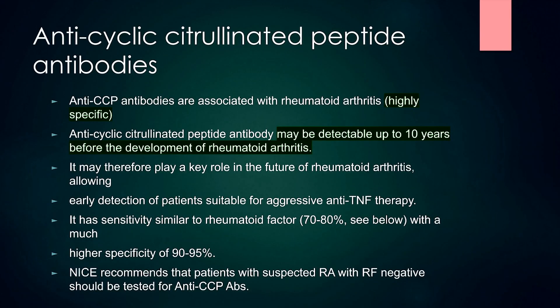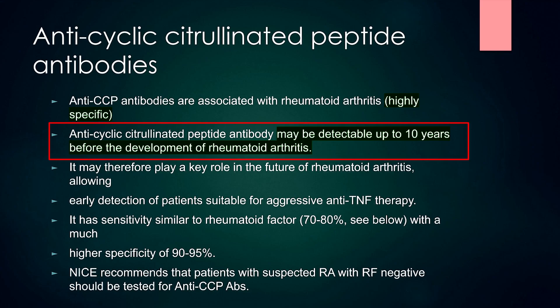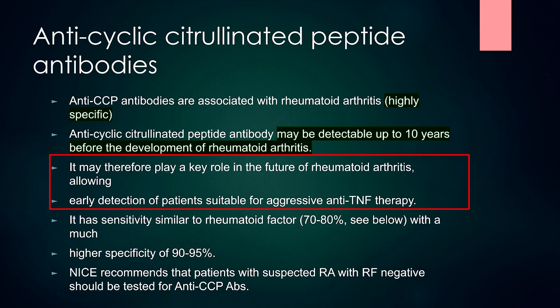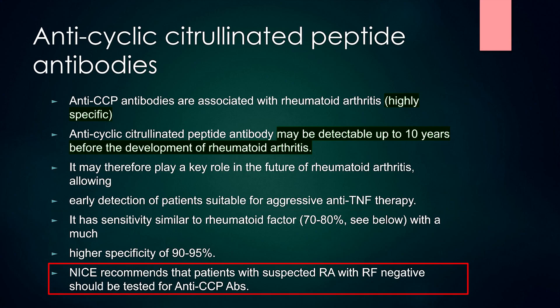There is another antibody called anti-CCP antibody or anti-cyclic citrullinated peptide antibody, which is associated with RA. It is highly specific — more specific than RF — with a specificity of 90 to 95%. Anti-CCP antibodies may be detectable up to 10 years before the development of rheumatoid arthritis, potentially allowing early detection for aggressive anti-TNF therapy. NICE recommends that patients with suspected RA who are RF negative should be tested for anti-CCP antibodies.